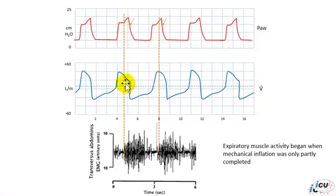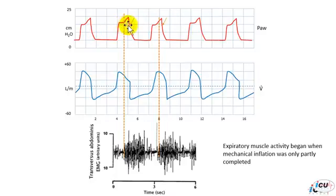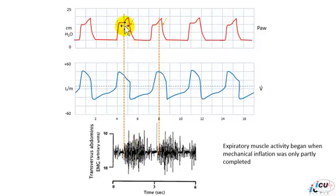In this example, the patient is on pressure control mode of ventilation. In pressure control mode, you set the inspiratory time on the ventilator, and the inspiratory time is finished at this point. However, you can see that the patient has a hump at the end of inspiration. When you relate this to the expiratory muscle activities, you can see that the patient activated his expiratory muscles, which caused the pressure to go up at the end of inspiration. So the patient terminated his inspiration; however, the ventilator inspiratory time is not finished yet. This is an example of early termination.